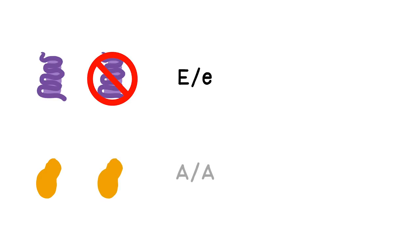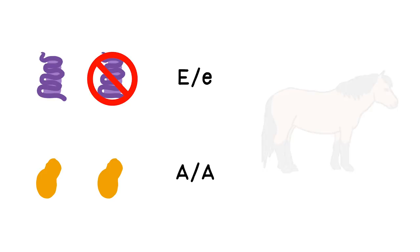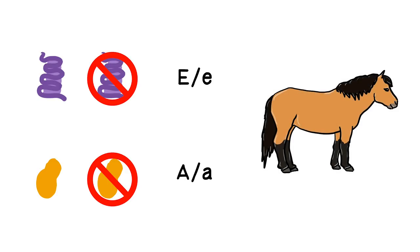If we have one good and one broken allele of E, but two good copies of A, the horse will still be bay, because the one good MC1R gene is still able to create receptors. The same is true if one of the copies of ASIP is broken. The one good allele still makes everything work as it should and the horse still looks bay.